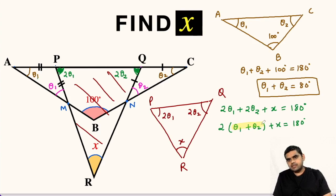Now in place of theta 1 plus theta 2, we can substitute 80 degrees. So this becomes 2 times 80 degrees plus x equals 180 degrees.